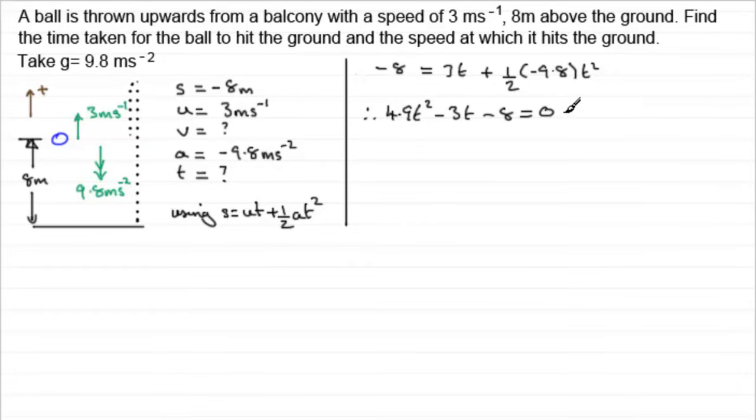Now normally, if this was an exam question or maybe one in the textbook, they generally give you one that will factorize. This one doesn't. So I'm going to use the quadratic formula. The quadratic formula being t equals minus b plus or minus b squared minus four a c all divided by two a. And a would be four point nine, b would be minus three and c would be minus eight. So if I use that formula, we're going to have minus b, so that's going to be plus three, and then plus or minus the square root of b squared, so that's minus three all squared minus four times a, which is four point nine times c, which is minus eight, all divided by two a, two times the four point nine.